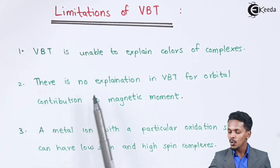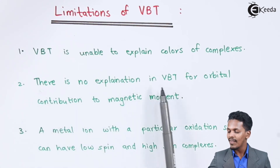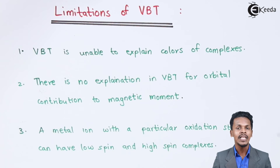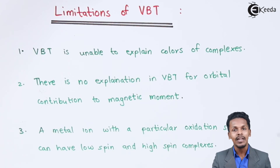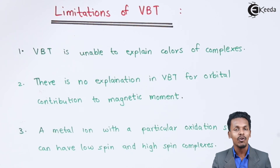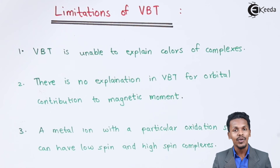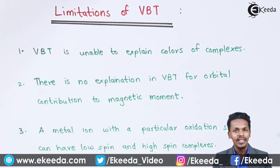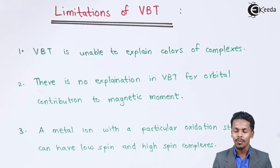Talking about the next point: there is no explanation in valence bond theory for the orbital contribution to magnetic moment. We understand that the magnetic moment is because of the orbitals which have electrons on them and which are revolving around a particular atom's nucleus. So in that case, valence bond theory doesn't give us a detail about the magnetic moment of the orbitals. So that is the biggest drawback.